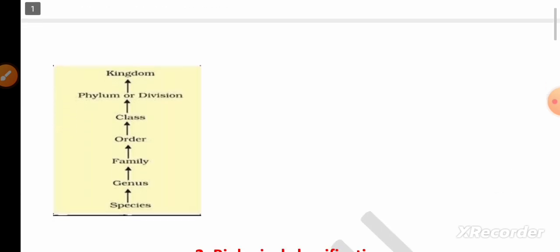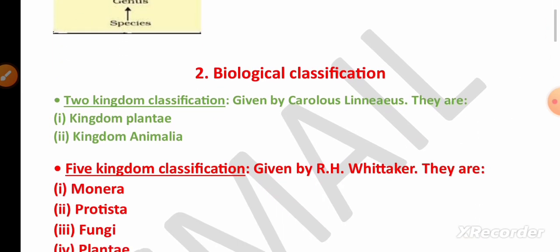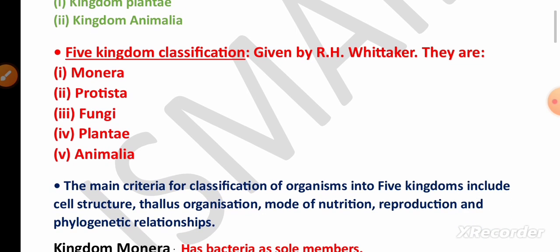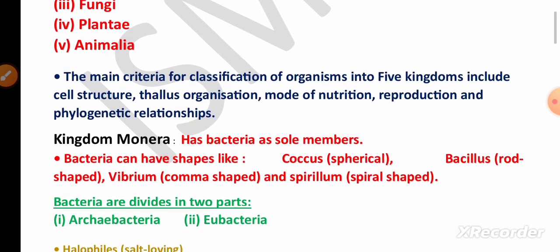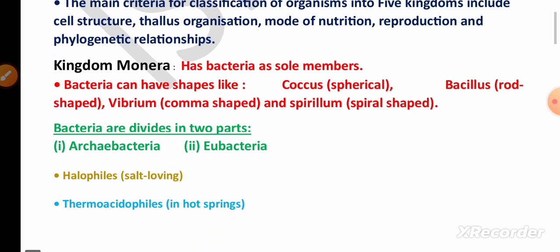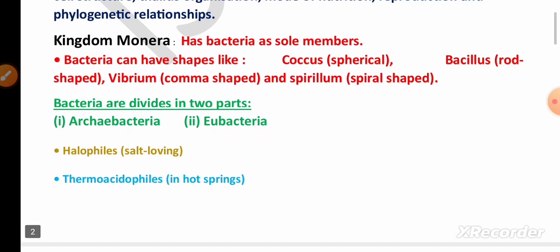For taxonomic hierarchy, remember the order from kingdom to genus. In the second chapter, Biological Classification, remember Carolus Linnaeus' two-kingdom classification and R.H. Whittaker's five-kingdom classification. The main criteria used to classify organisms is very important.